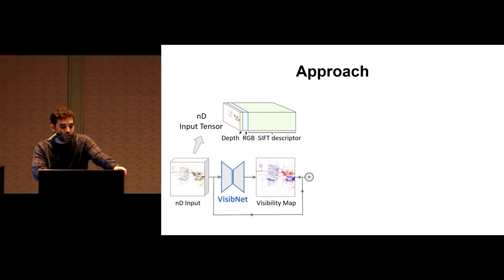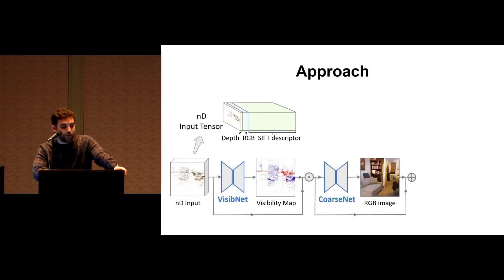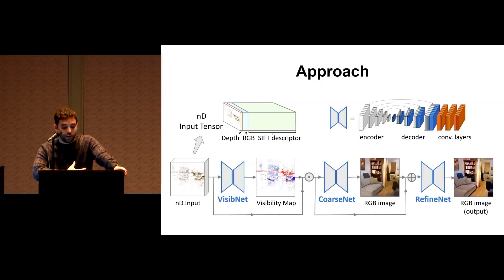The first network, VisibNet, produces a binary visibility map which is used to filter out occluded points. The second network, CoarseNet, takes the filtered input and produces a coarse RGB reconstruction. Lastly, the third network, RefineNet, is trained adversarially to produce the high quality output. Here we show a virtual tour of a scene produced using our approach. The input point cloud is shown on the left, our result in the middle, and the ground truth images on the right. As you can see, our result is very close to the ground truth.